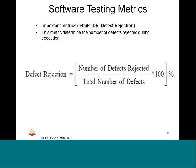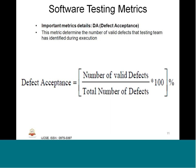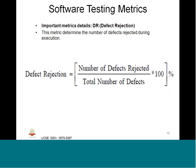Defect rejection is also one of the important test metrics. This determines the number of defects rejected during execution — meaning the reported defects are not justifiable, or the issue found in the requirement or design is not accepted by the development team. Defect rejection (DR%) = (number of defects rejected ÷ total number of defects) × 100.